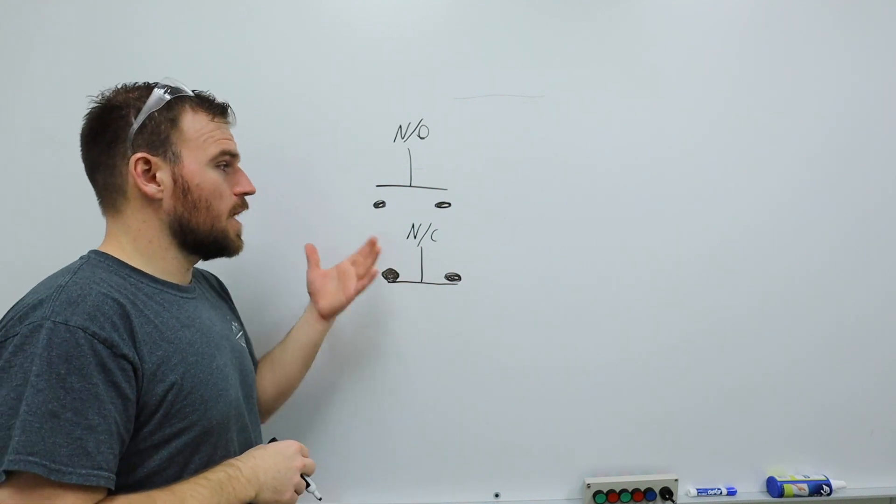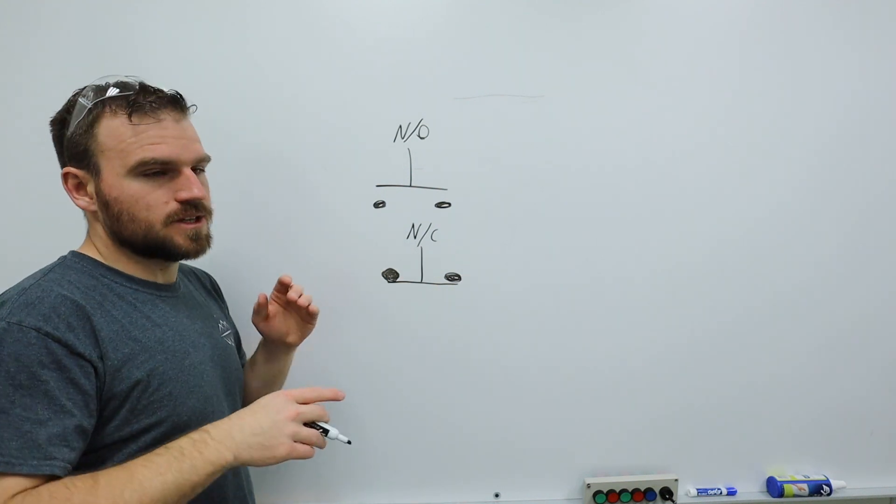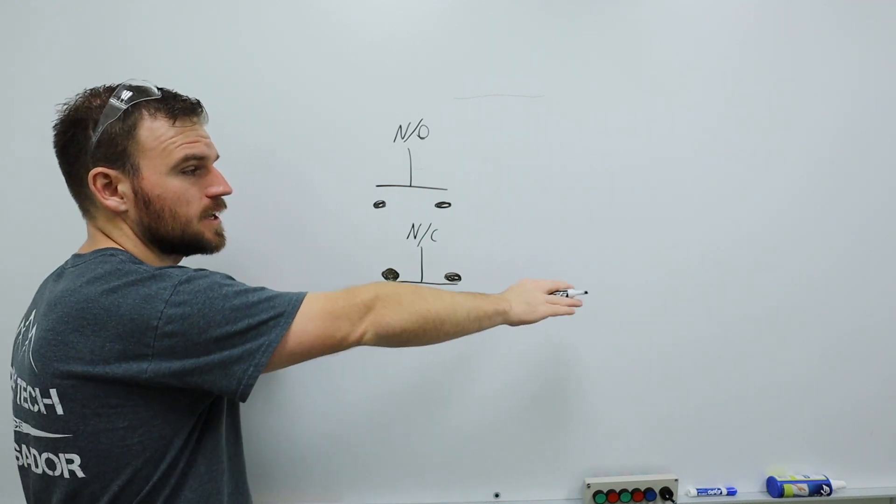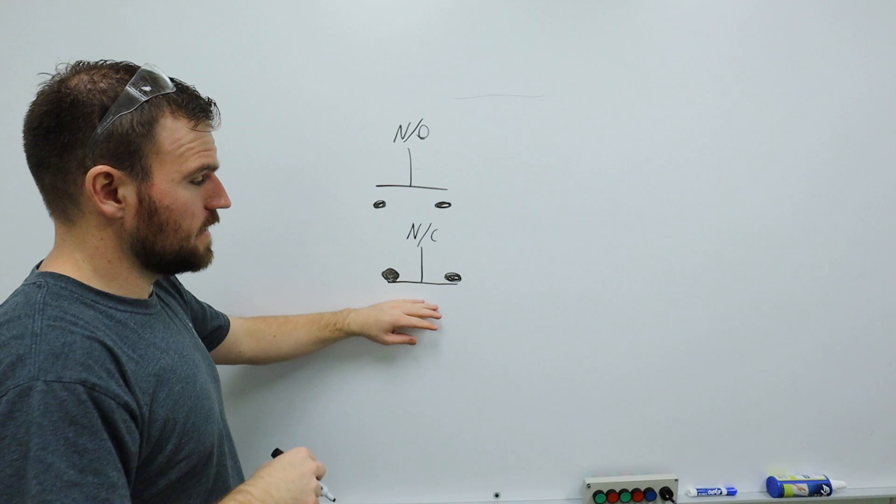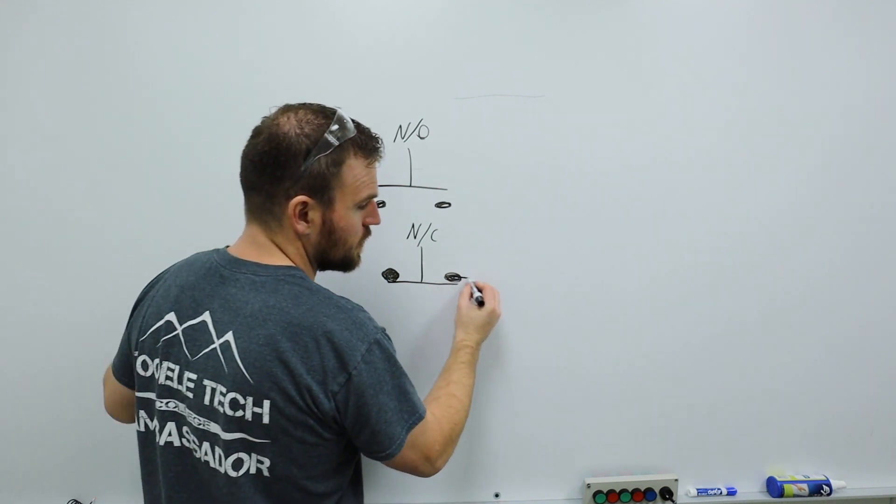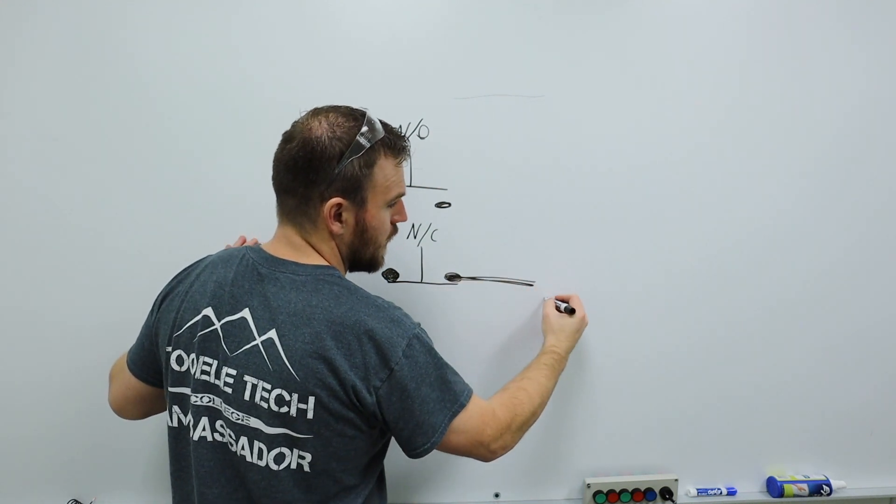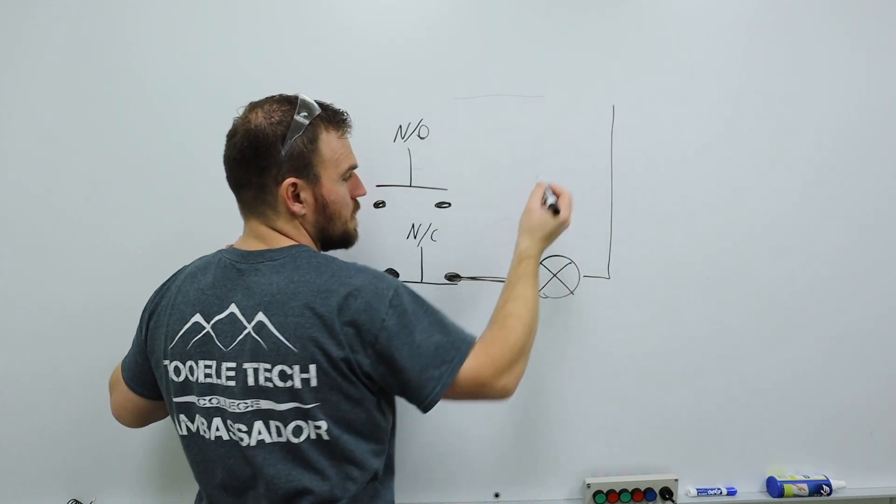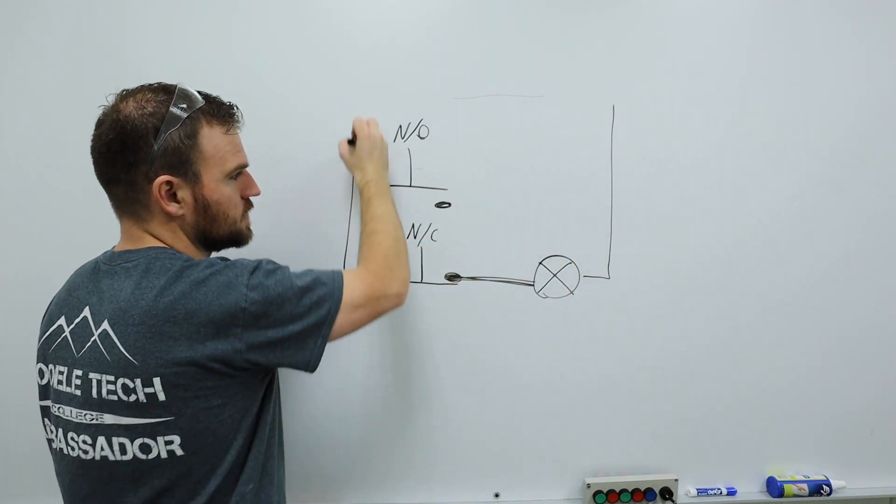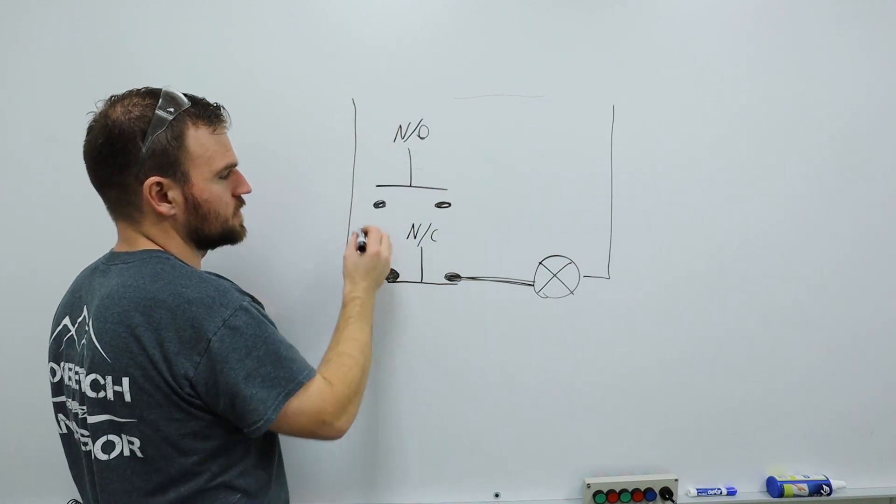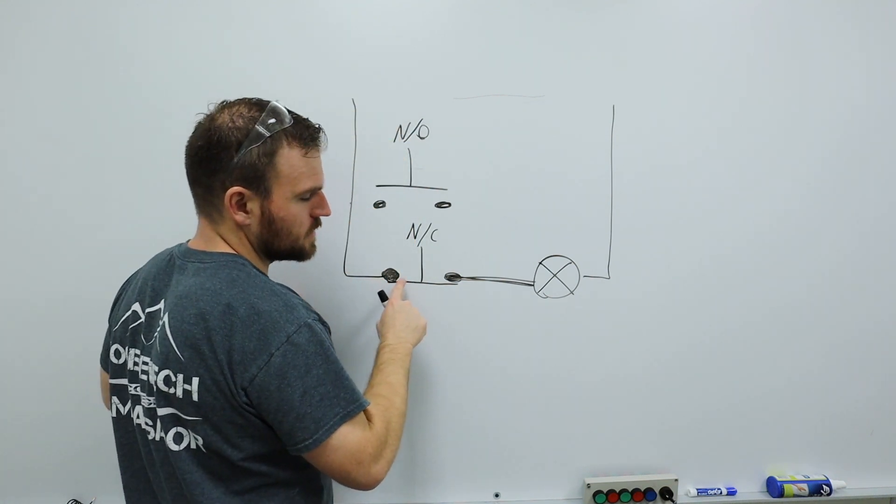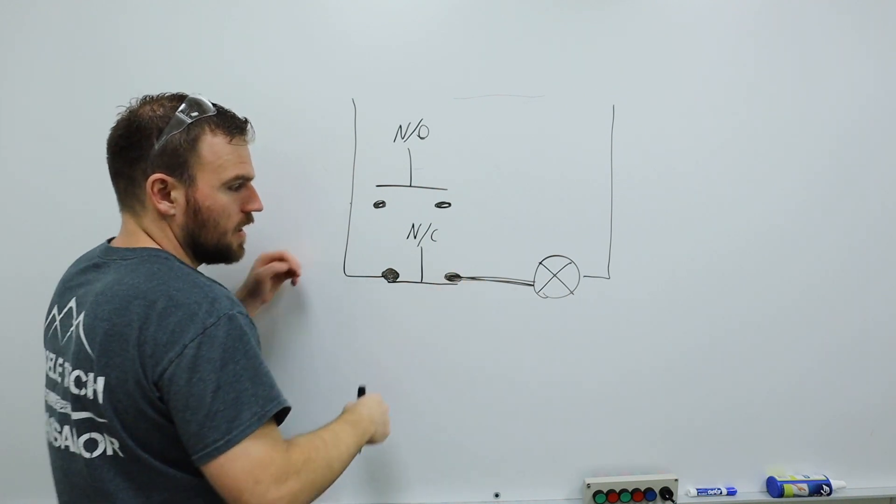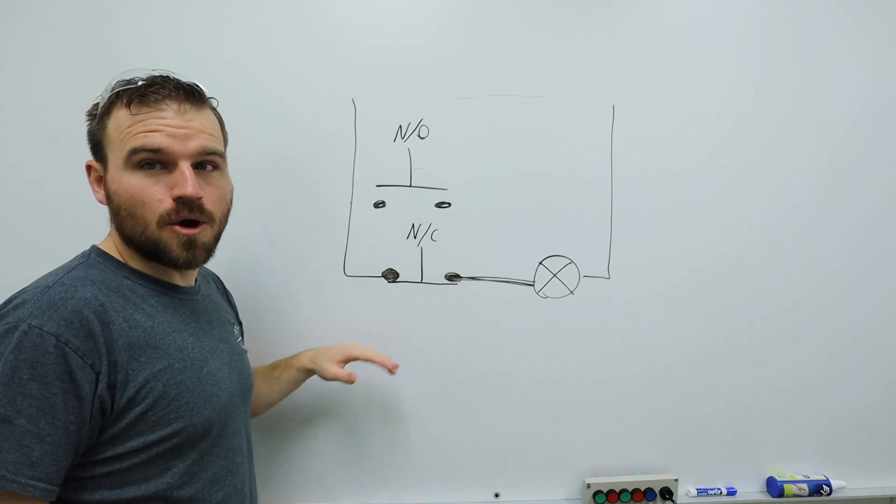Now, what happens is the normally closed is actually creating a closed circuit, so that way the circuit is closed and electricity can pass through it. So if I had this switch and it went over here to a light and then went back up to maybe your ground source and over here was your other side, we would have power transferring through this switch at all times. So that light would be on until somebody pushed that push button to open it.